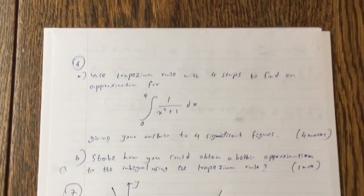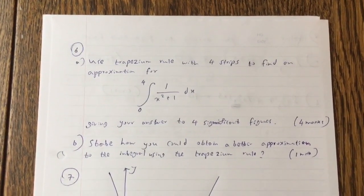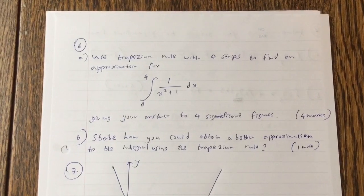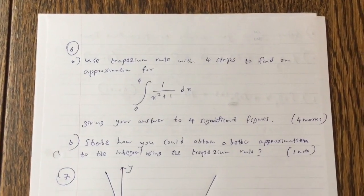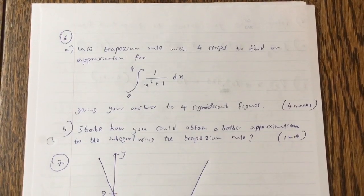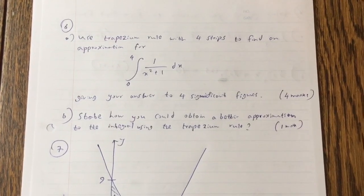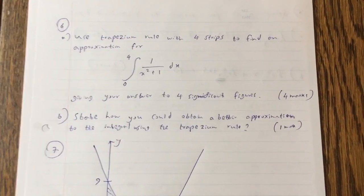Question 6. Use trapezium rule with 4 strips to find an approximation for integral from 0 to 4 of 1 over x squared plus 1 dx. Giving you an answer to 4 significant figures. Part B: State how you could obtain a better approximation to the integral using the trapezium rule.